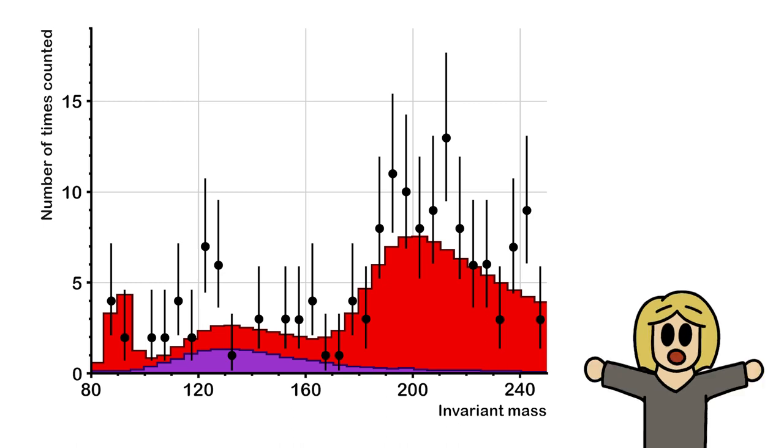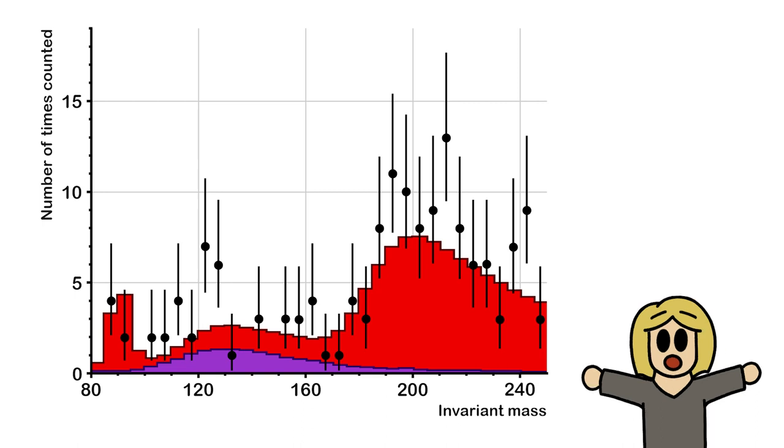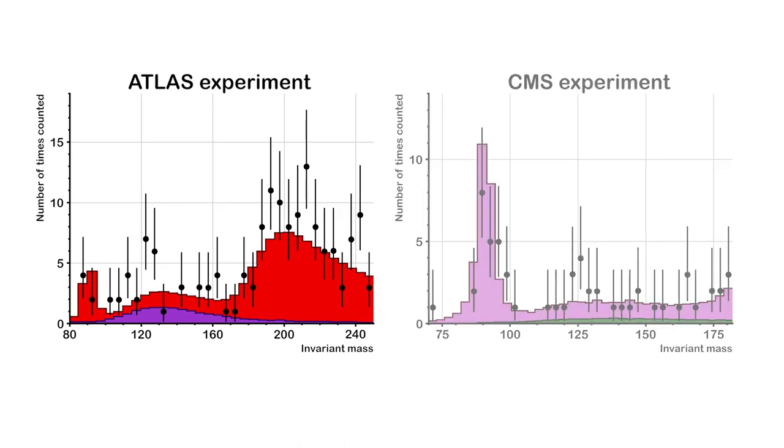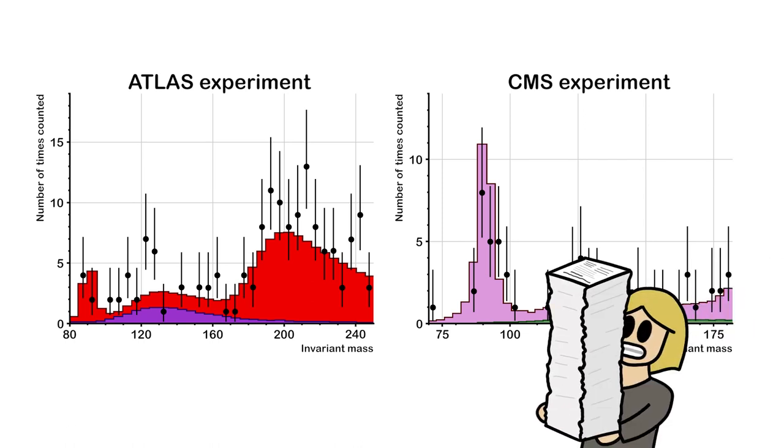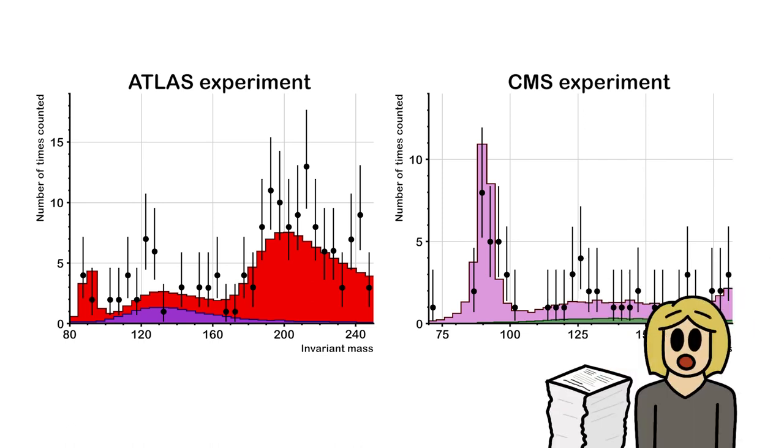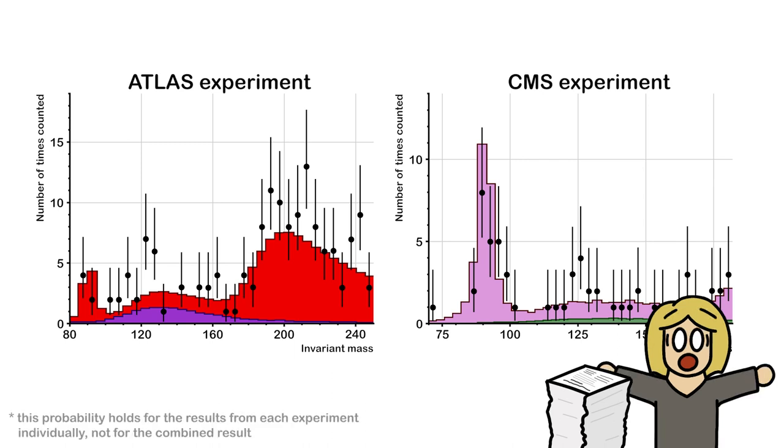a similar excess in the same decay channel at the same invariant mass was found by another experiment. Here is their plot, with indeed a peak at a similar value for the invariant mass. Not only that, but both experiments also found similar peaks in plots for other decay channels. The probability that all these measurements lined up in this way by sheer chance was calculated to be 1 in over 2 million. 1 in over 2 million.